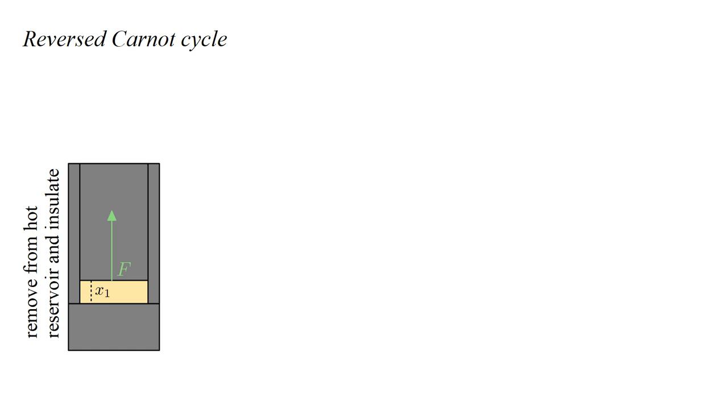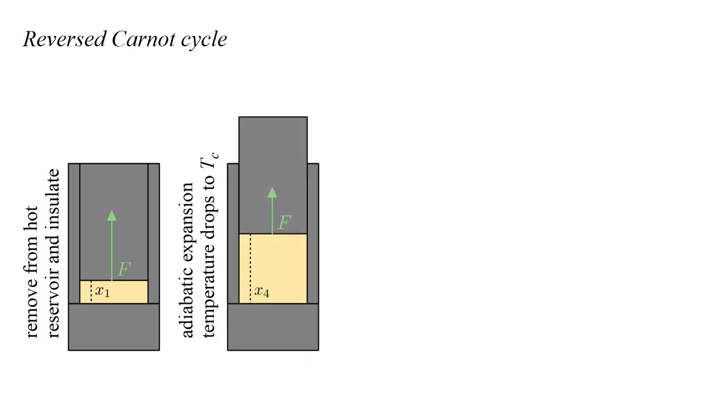To illustrate, we start with the gas hot and maximally compressed. We remove the hot reservoir and insulate the system. The gas is allowed to expand adiabatically, converting internal energy into work done on the environment until the gas temperature drops to T cold.